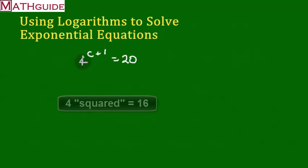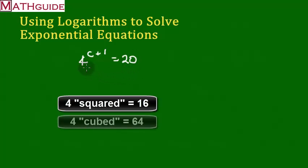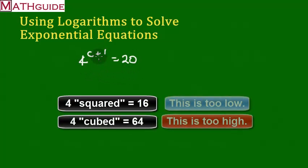So we know that, for instance, 4 squared is equal to 16. That's too low. 16 is not what we're supposed to get. We're supposed to get 20. We know that 4 cubed, 4 times 4 times 4, is equal to 64. That's way too high. We're supposed to get 20 here.